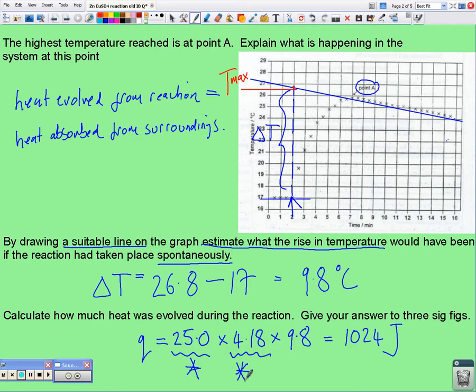This says three sig figs. So, back here, 1020 joules. Okay, so that's the amount of energy that was evolved for the reaction we studied, just using the mass of zinc and the volume of copper.